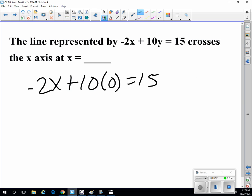If we do that, then we have negative 2x plus 10 times 0, which is also 0, so we just have negative 2x equals 15. If we divide both sides by negative 2, then we have x equals negative 7.5.